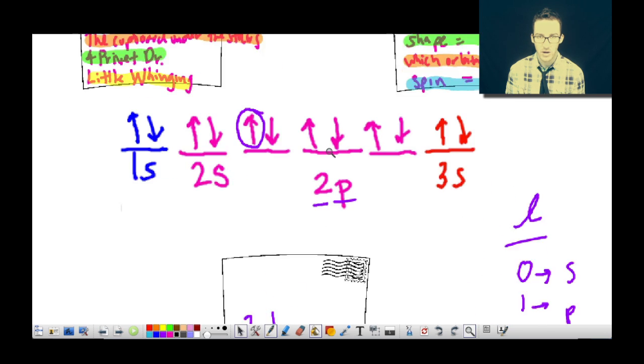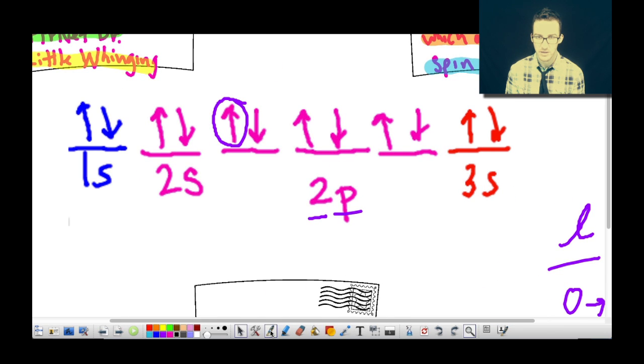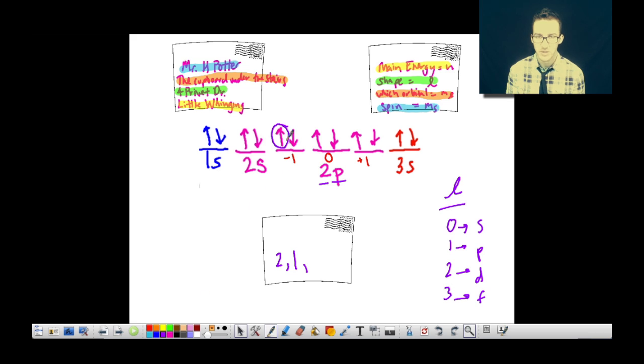So as we think about our three P orbitals here, the central one will have that zero orientation. To the left of it, we'll have negative numbers, the negative one. To the right of it, we'll have positive numbers, positive one. And so as I think about where this electron is located, which particular 2P orbital, we're talking about the negative one orientation.